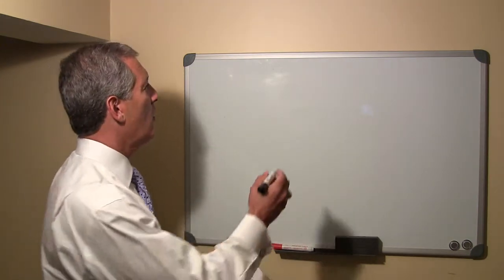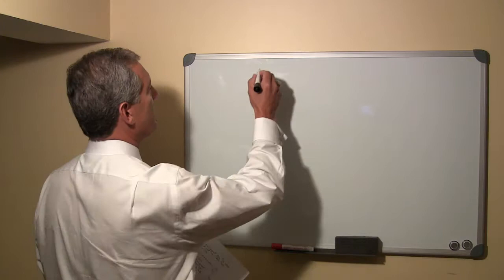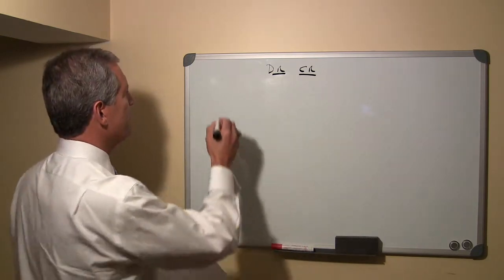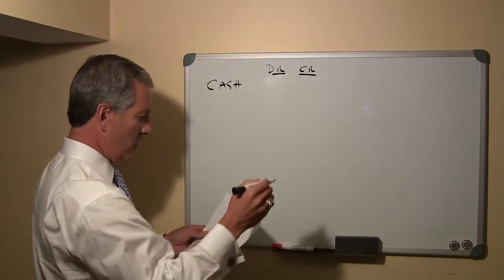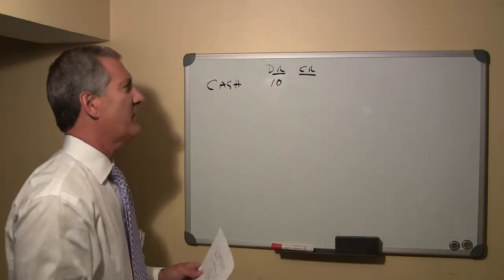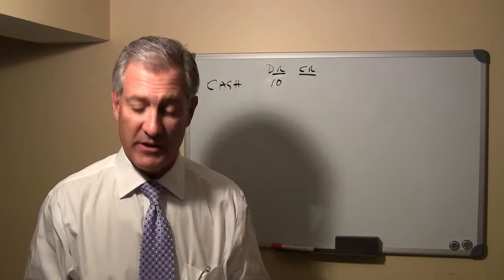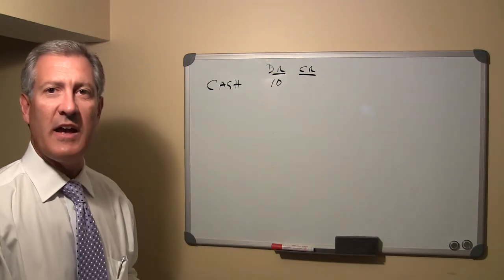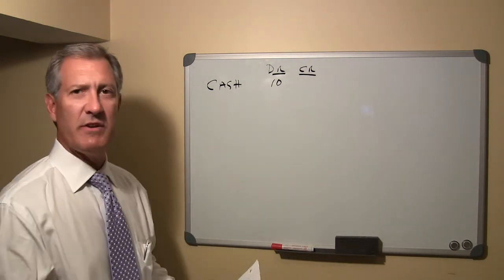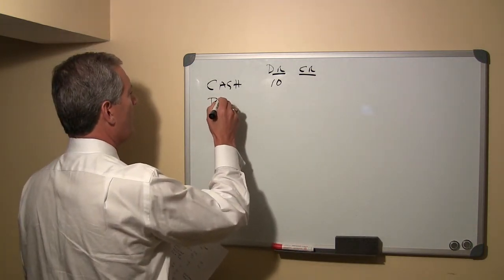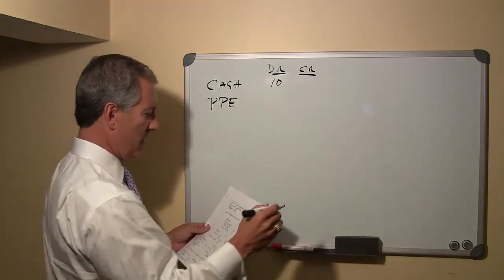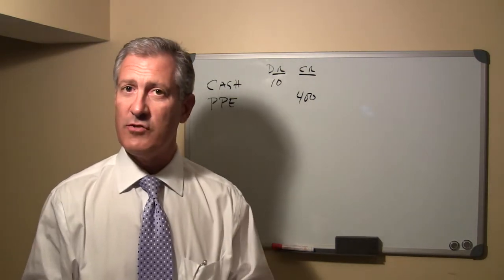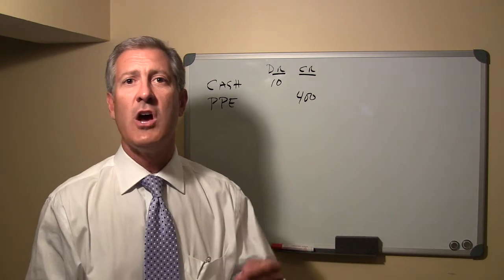The first step is to record the amount of cash received. We're going to have a debit — cash was increased by $10, so a debit to cash for $10. The second step on recording a disposal of an asset is to remove the asset from the books of the company. We're going to decrease that asset by crediting property, plant, and equipment for the original cost of $400.